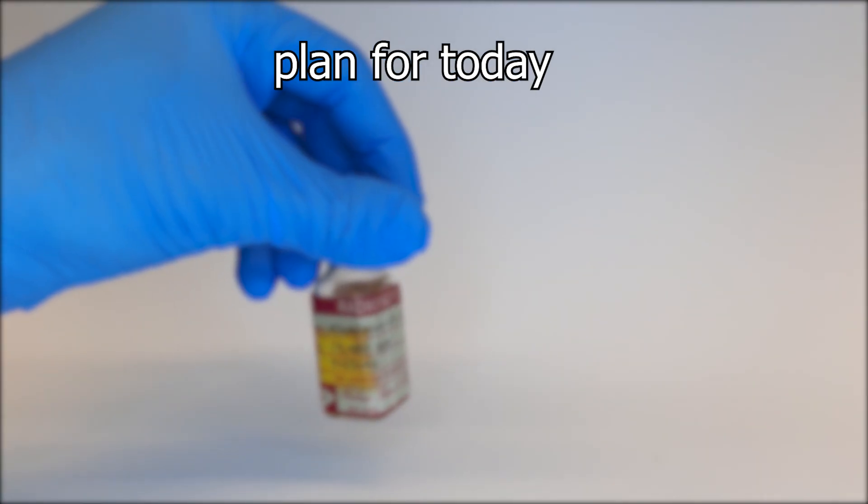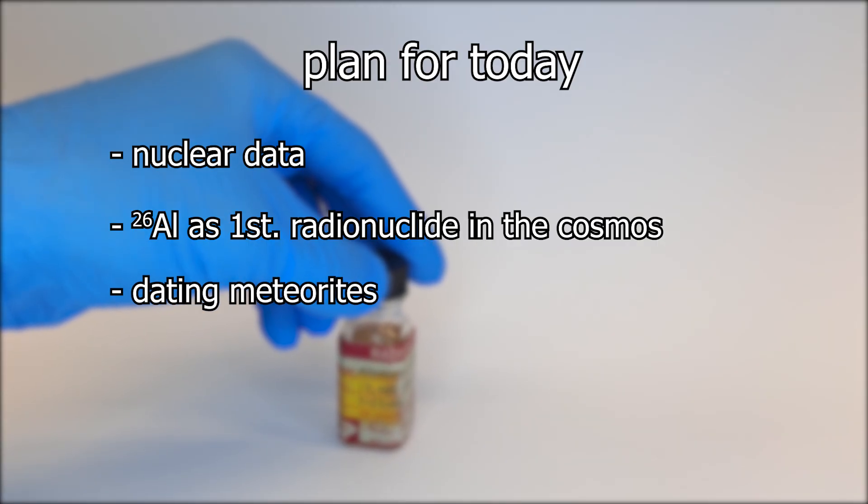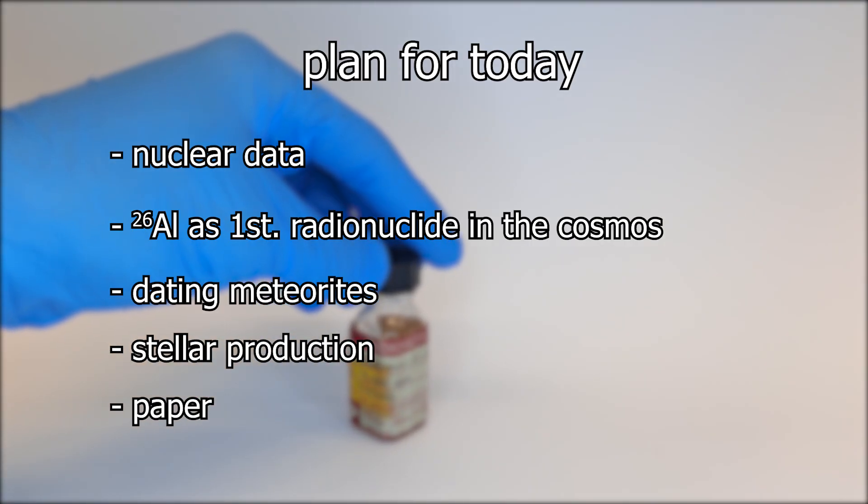What is on the agenda for today? Nuclear data and its gamma spectrum, aluminium as the first sign of radioactivity in outer space, aluminium and the dating of meteorites and the stellar production of the nuclide and the beginning of the solar system.